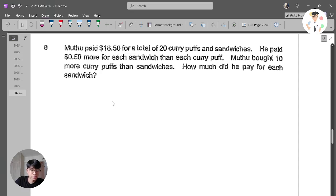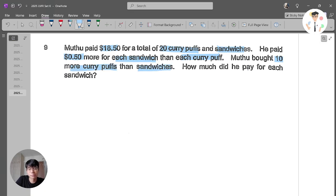Let's move on to our next question, also from Nanyang Paper 2 question 9. Let's solve this question. Muthu paid $18.50 for a total of 20 curry puffs and sandwiches. He paid 50 cents more for each sandwich than each curry puff. And Muthu bought 10 more curry puffs than sandwiches. How much did he pay for each sandwich? Let's try to arrange our information a bit nicer. I have curry puff, I have sandwiches.